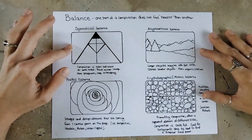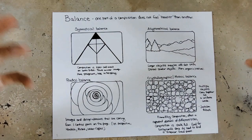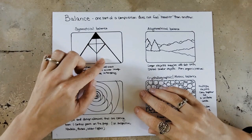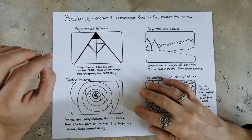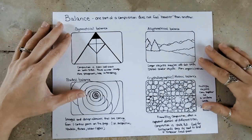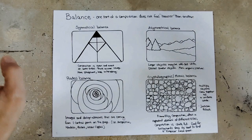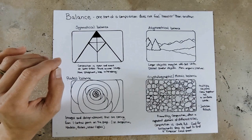You have symmetrical balance, where the composition is even and pretty much exact on both sides — think of a mirror image. This isn't going to be as adventurous; it's a little less interesting and can feel stagnant. In realism, things are usually not perfectly symmetrical — the world is just not that perfect. Asymmetrical balance is where you can have larger objects offset with a cluster of smaller objects. It's more organic, more natural, and a little bit more realistic, especially if you're thinking in terms of nature or the human form.